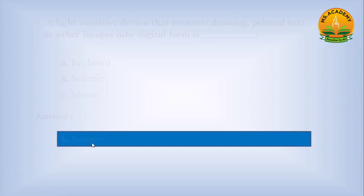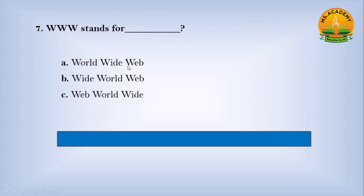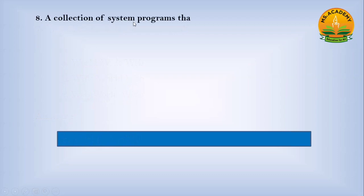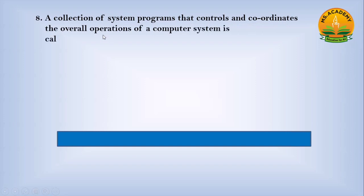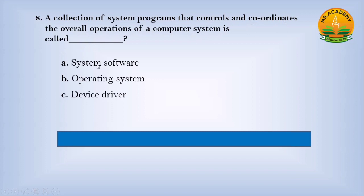WWW stands for — option A: World Wide Web, option B: Wide World Web, option C: Web Worldwide. Answer: A — World Wide Web. A collection of system programs that controls and coordinates the overall operations of a computer system is called — option A: system software, option B: operating system, option C: device driver. Answer: B — operating system.